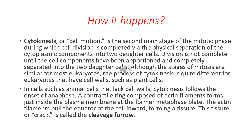So how is the cleavage furrow formed in animal cells? A contractile ring composed of actin filaments forms just inside the plasma membrane at the former metaphase plate. These actin filaments then pull the equator of the cell inward, forming a fissure known as the cleavage furrow. This is how cytokinesis happens in the animal cell.